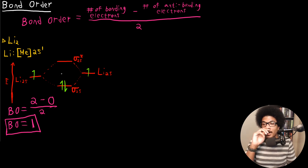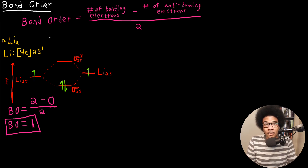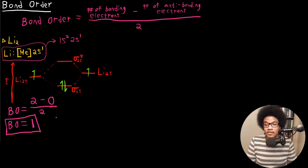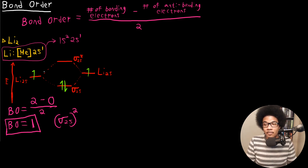Another thing to point out: similar to atomic orbital electron configurations, you can write electron configurations for molecular orbitals as well. For example, lithium's full configuration would be 1s2, 2s1. You can write similar configurations for molecular orbitals. The electron configuration for Li2 would be sigma 2s2, meaning there is a bonding 2s orbital with two electrons in it. That is the electron configuration for lithium dimer, Li2.